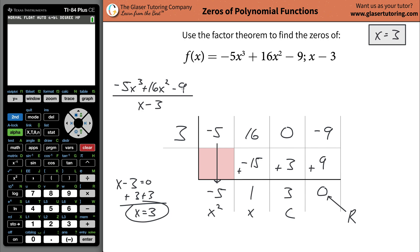So I can now write my answer. I can say that when I do this division, it is equal to negative 5x squared plus x plus 3. Cool.